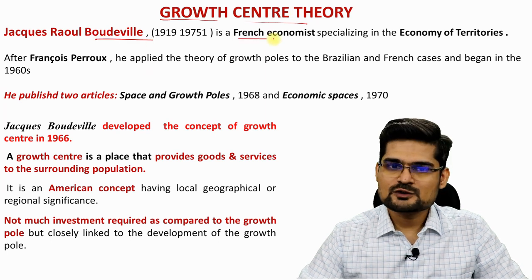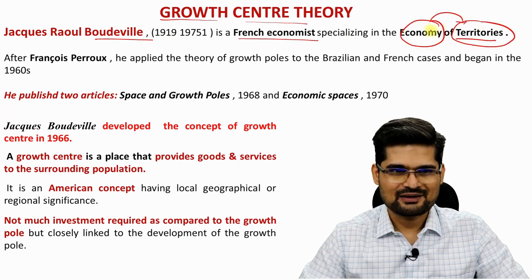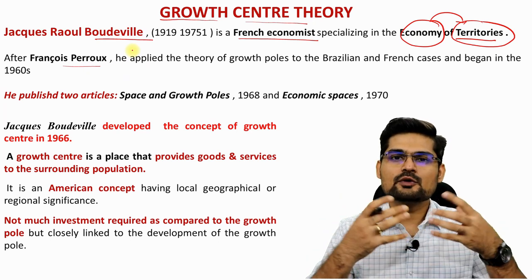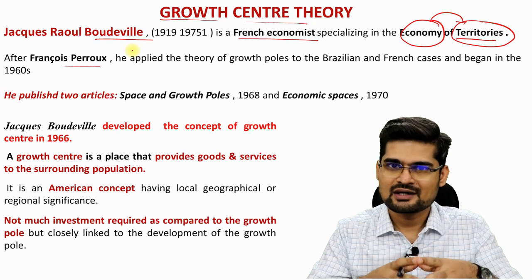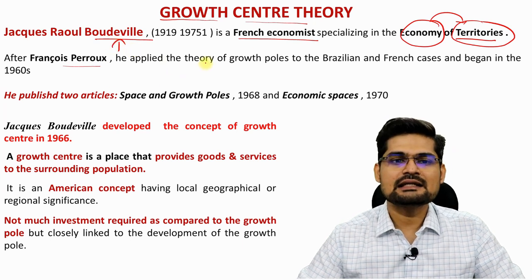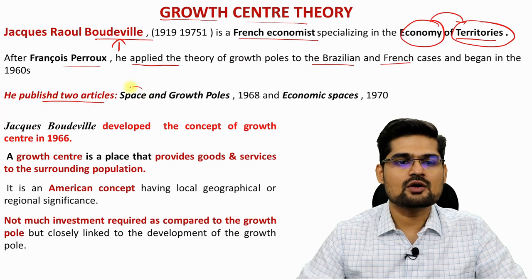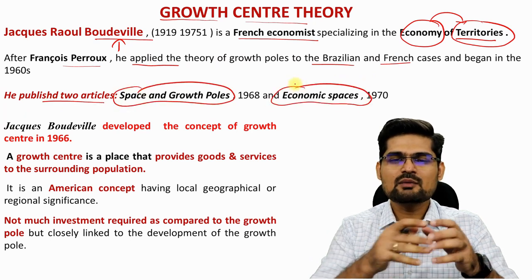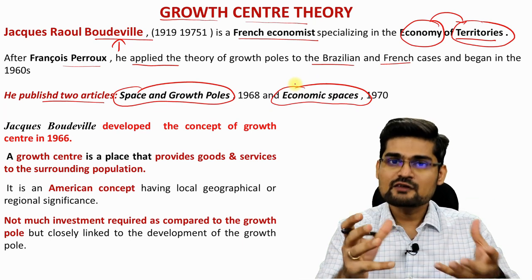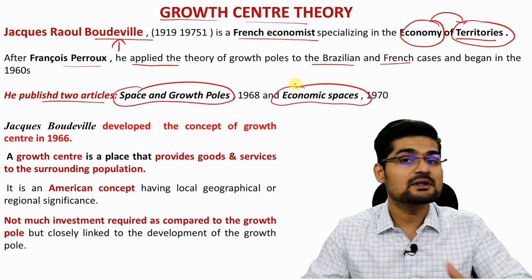Boudeville was also a French economist specialized in economy of territories — this is where economics and geography combine together. According to Francois Peru's growth pole theory, which we already studied, growth happens around a pole: a polarized space and economic space led by a propulsive industry. This came in 1955, and around the same time in the 1960s, Boudeville was doing his research, applying this theory in Brazilian as well as French areas. He published two articles called 'Space and Growth Poles' and 'Economic Spaces.' The shortcomings of growth pole theory, which had been criticized, were what Boudeville tried to overcome, and it was he who actually gave importance to growth pole theory, making it more popular.